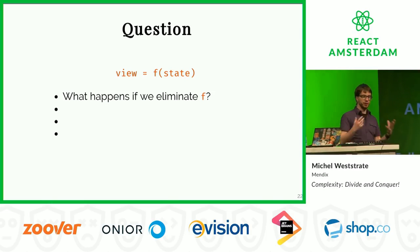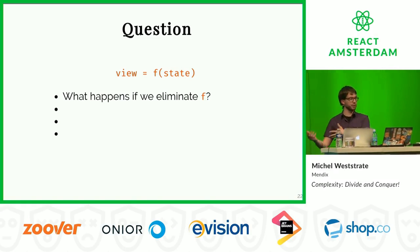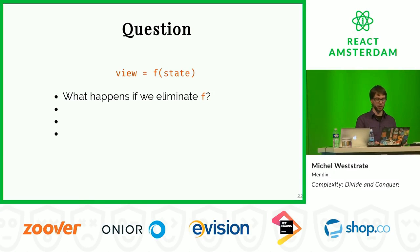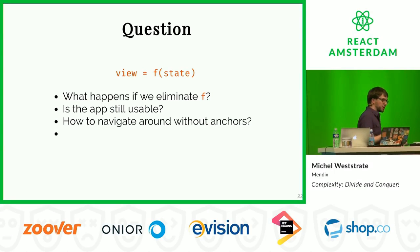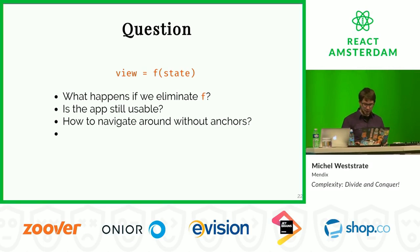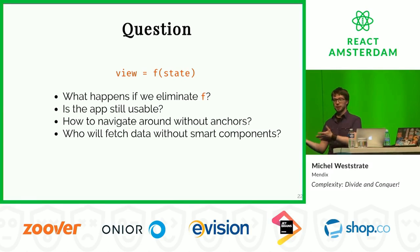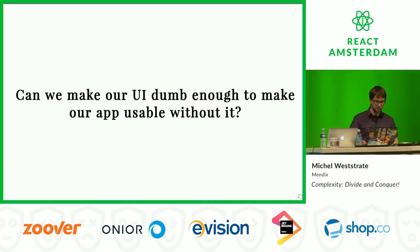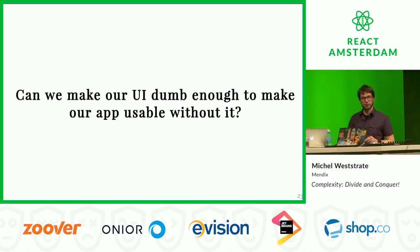This brings us to an interesting question: if your view is just a pure function of your state, what happens if you throw away your view? That shouldn't affect your application at all, because it's just a pure function - you still have your state and a working application, you just can't see anything. In practice it's harder: is the app still usable from a command line or testing perspective? Who's going to fetch data from the server if there are no smart components? Can we make our UI dumb enough to make our app usable without a UI?